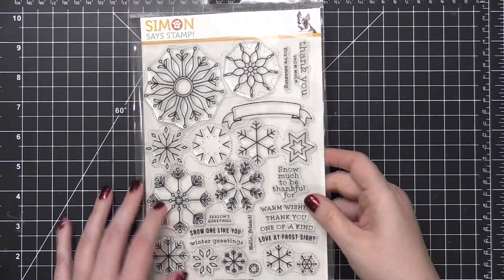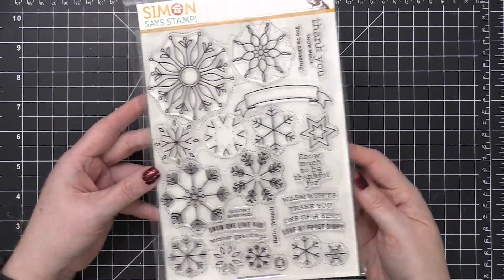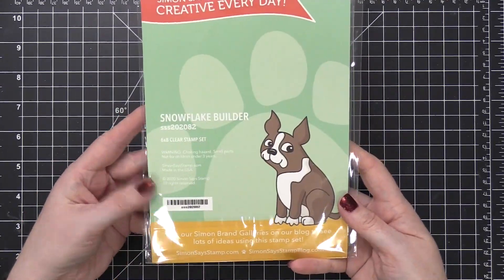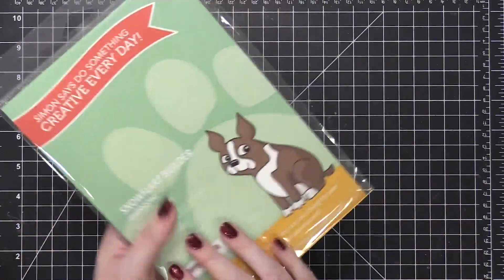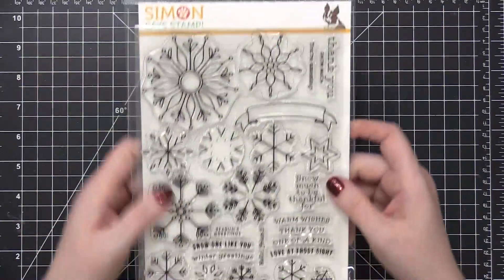Hi everyone, Kristina Werner here. Welcome to another video for simonsaysstamp.com. Today I'm going to be using the Snowflake Builder six by eight stamp set that is included in the January 2020 card kit from Simon.